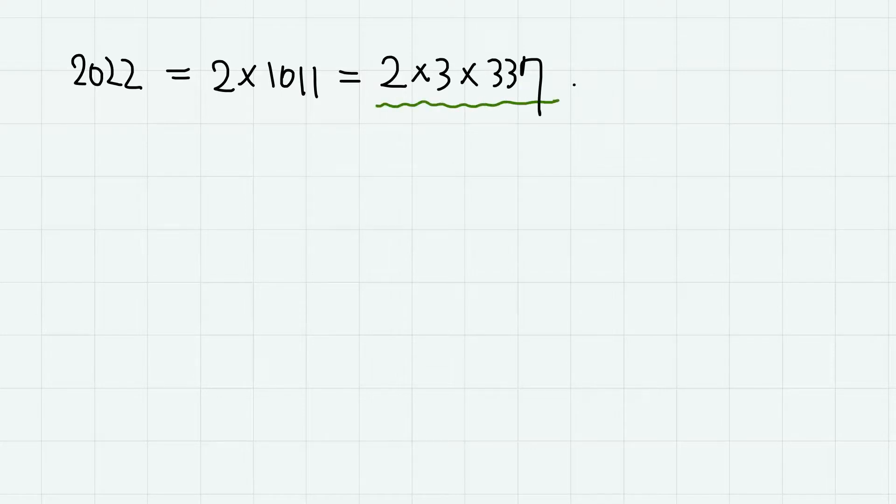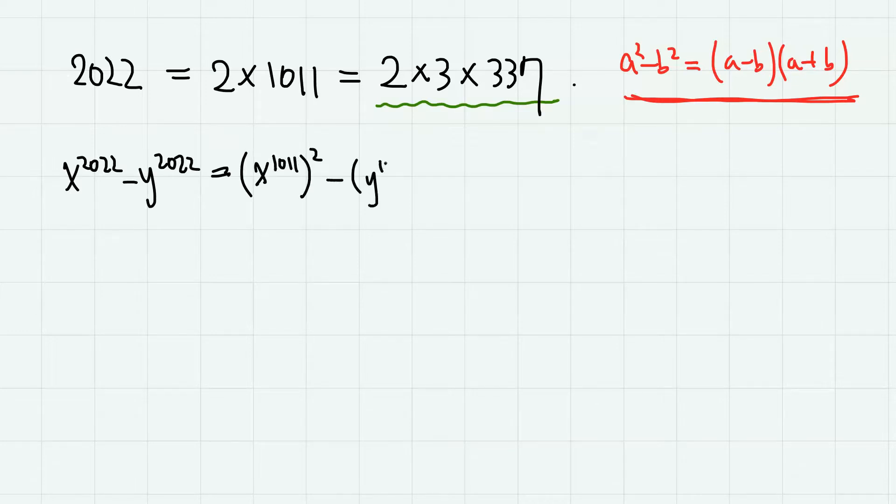Let us first use the formula for difference between squares. Here we can write x to the 1011 squared minus y to the 1011 squared. So we have x to the 1011 minus y to the 1011, times x to the 1011 plus y to the 1011.